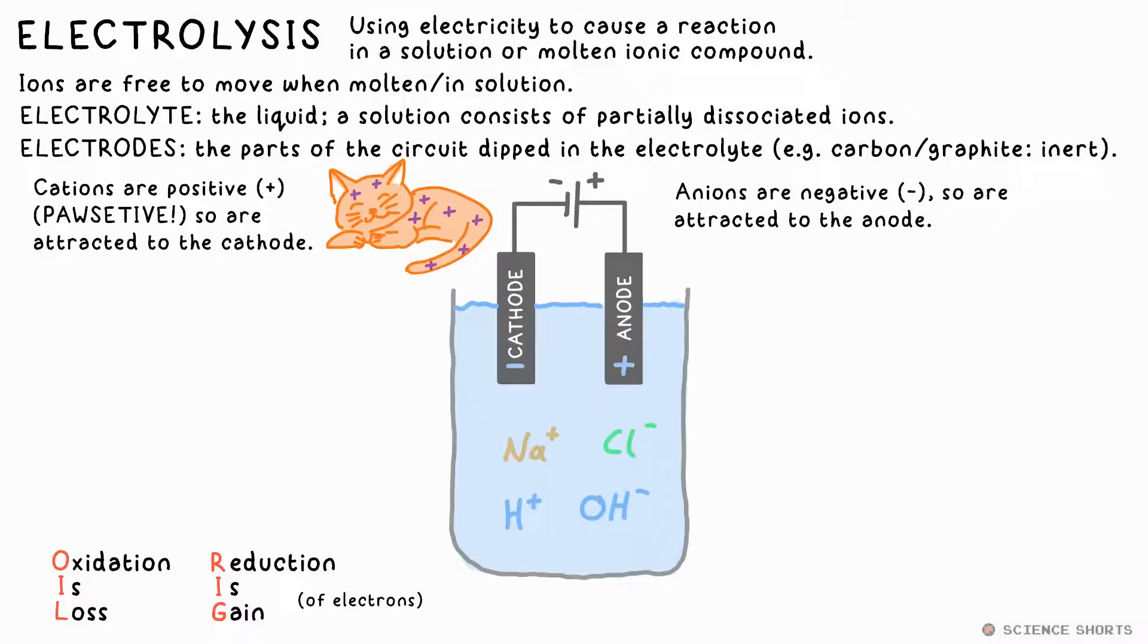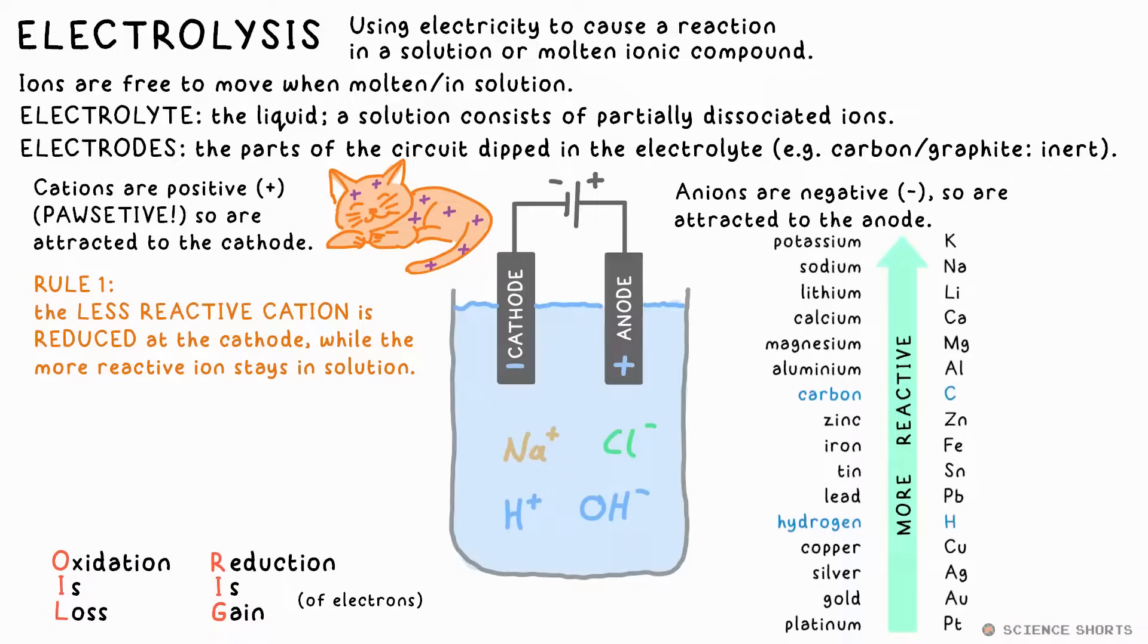But there's an issue. Only one type of cation can be reduced at the cathode and similar for the anode. This is potentially the trickiest bit about electrolysis, remembering what the rules are that determine what will be produced at each electrode. And it's all to do with reactivity. Here's the first rule that you need to remember. At the cathode, the less reactive cation will be reduced and the more reactive cation will stay in solution. So let's look at our reactivity series. We can see that hydrogen is less reactive than sodium, which means that hydrogen will be reduced while the sodium ions stay in solution.